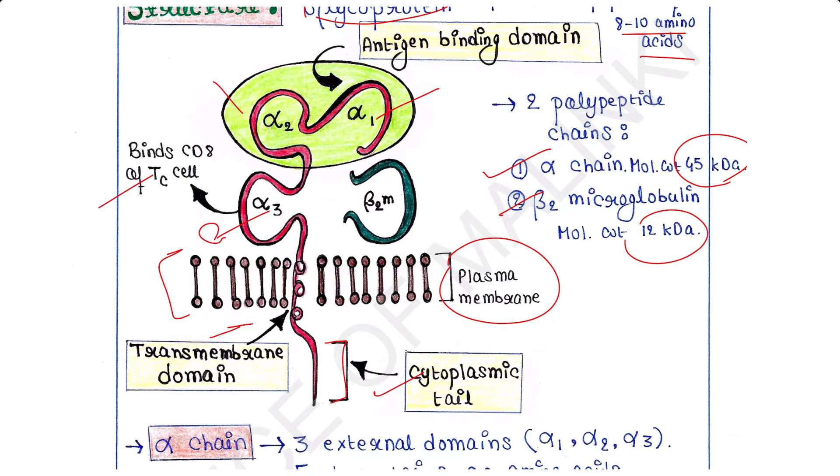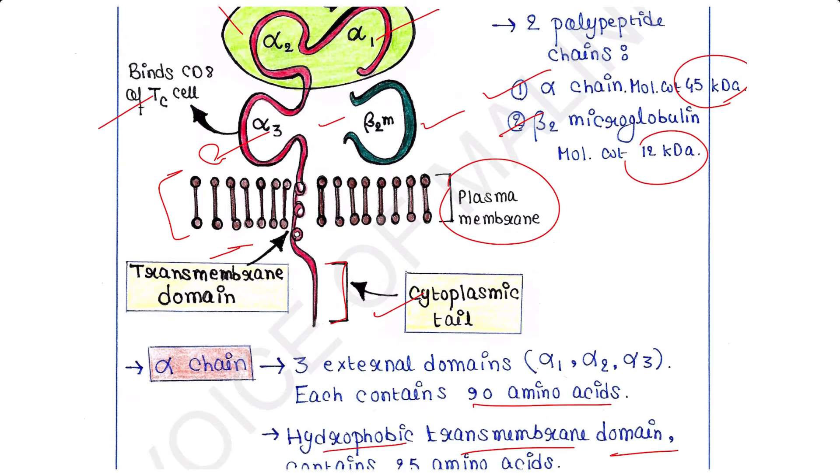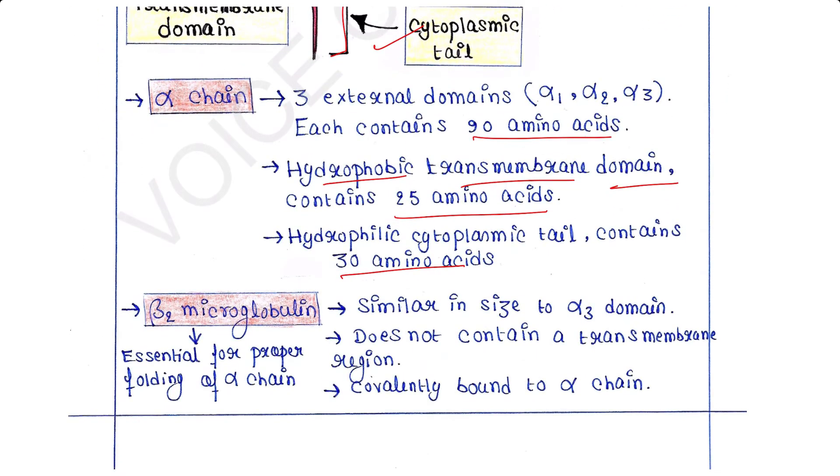The beta 2 microglobulin is similar in size to the alpha 3 domain. It does not contain a transmembrane region and it is covalently bound to the alpha chain. It is essential for proper folding of the alpha chain.